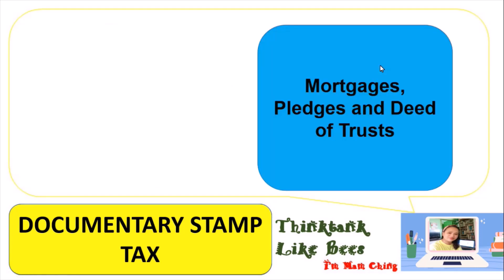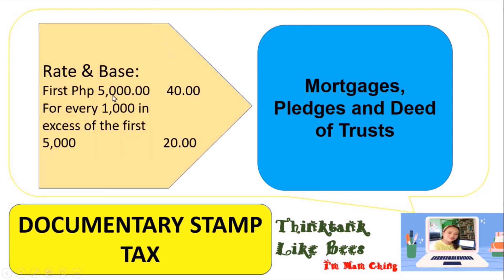For mortgages, pledges, and deeds of trust, the rate and base is: the first 5,000 pesos is 40 pesos; for every 1,000 in excess of the first 5,000, it is 20 pesos. For example, with a mortgage worth 100,000 pesos: the first 5,000 is 40 pesos; the remaining 95,000 divided by 1,000 equals 95, multiplied by 20 pesos equals 1,900 pesos; so 1,900 plus 40 equals 1,940 pesos in documentary stamp tax.